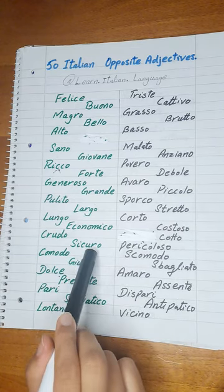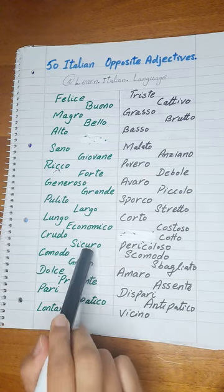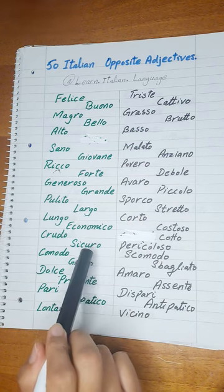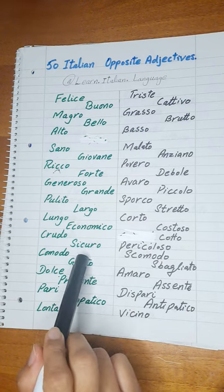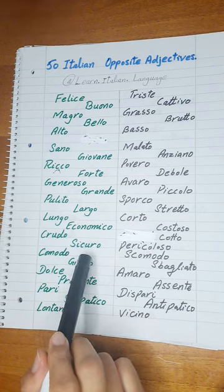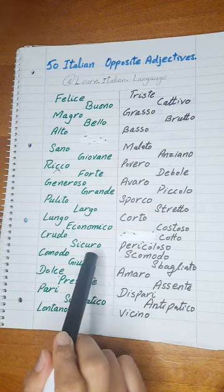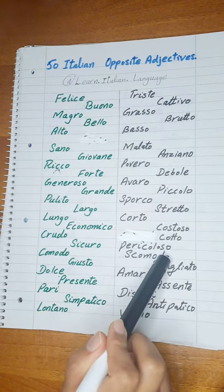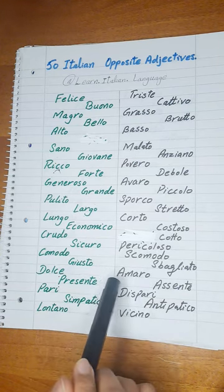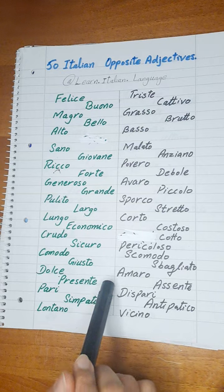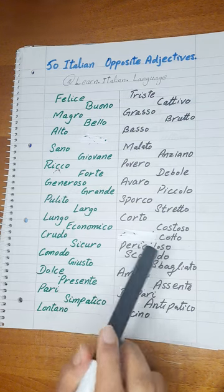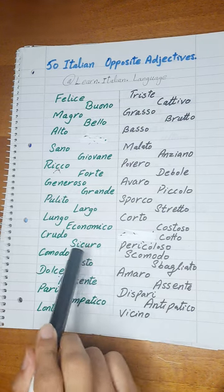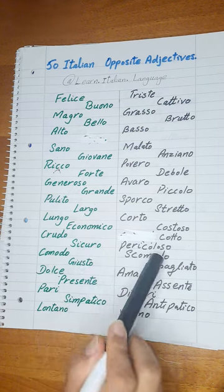Next is Sicuro. Sicuro means safe or secure. The opposite of Sicuro is Pericoloso. Pericoloso means unsafe. Sicuro — safe. Pericoloso — unsafe.